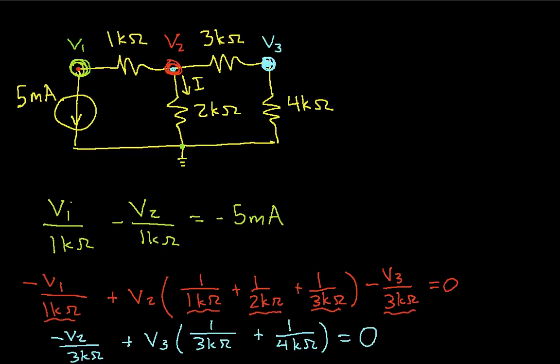So there we have it. We actually have three equations and three unknowns. All we need to do now is solve the three equations and three unknowns for v1, v2, and v3. And we're done.